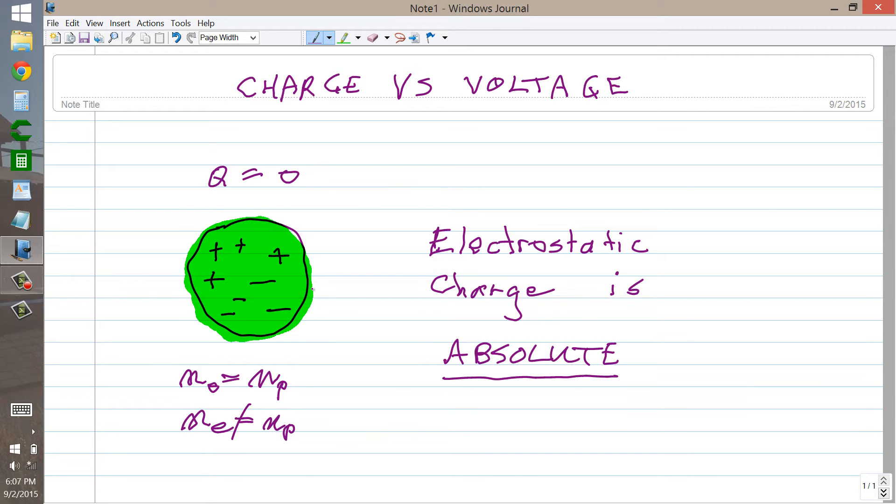Whereas, consequently, you can do the same thing with positive. If there are more protons than there are electrons, then you have a positively charged object. Now all this sounds just trivial at first thought, but really it's rather deep because electrostatic charge is absolute. You can define an absolute standard for electrostatic charge, but you can't do it for voltage. Not really.